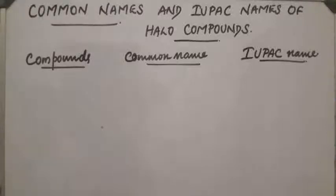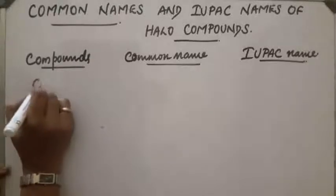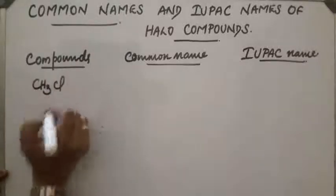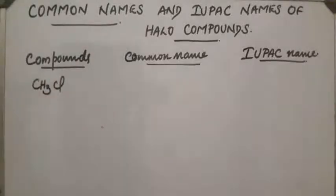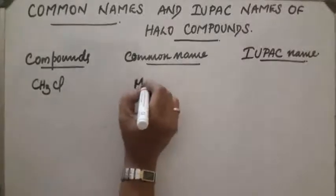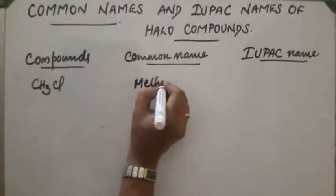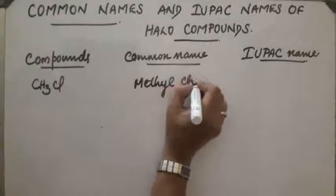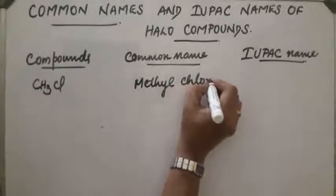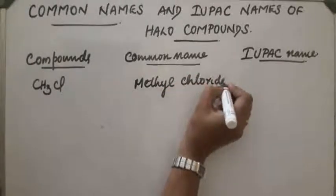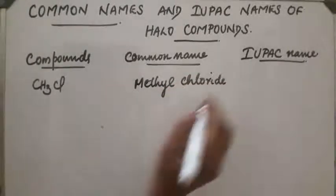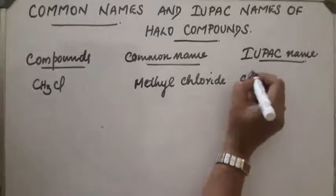Common names and IUPAC names of halocompounds. First compound CH3Cl. The common name of this compound is methyl chloride. The IUPAC name is chloromethane.